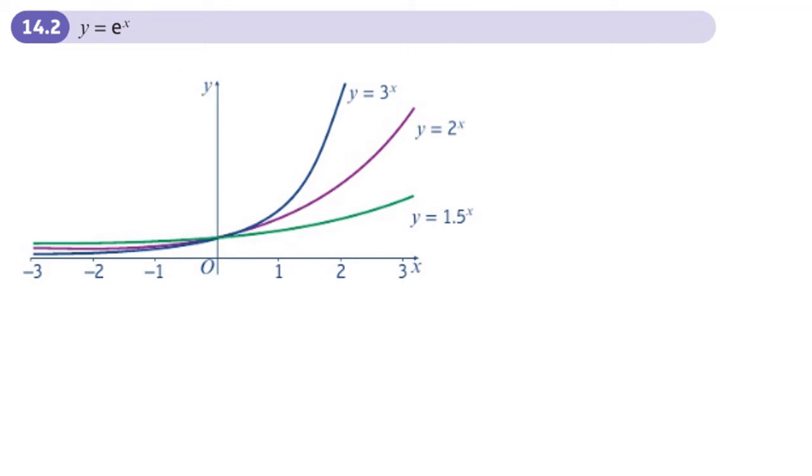This is the second section of the exponentials and logarithms chapter, about the exponential e to the x. Here are some graphs of different bases: 3, 2, and 1.5. There is a graph that would be somewhere in between the 2 to the power of x and 3 to the power of x, and it would be something like y equals 2.71 to the power of x.